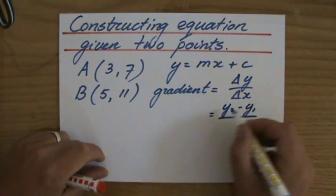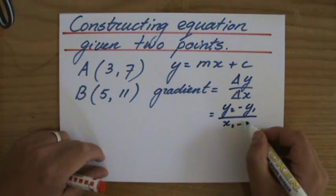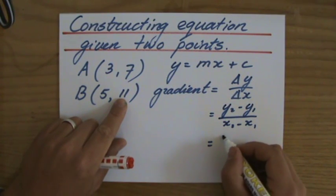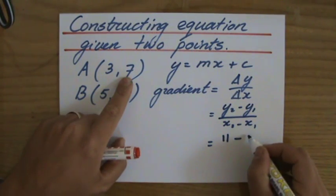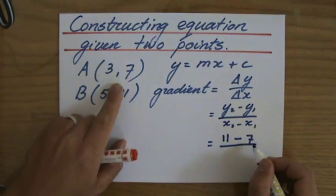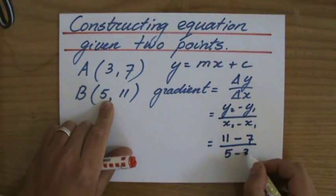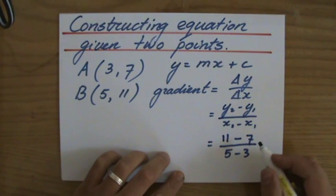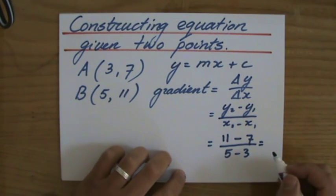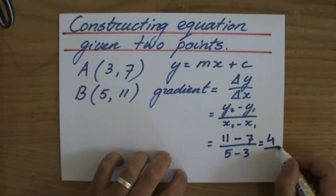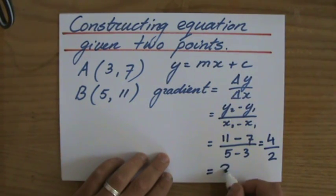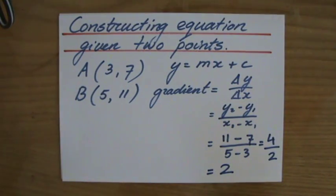That means the same thing: the difference x2 minus x1. That is 11 minus 7 divided by 5 minus 3. I really hope that you are checking your workings now as well to see if you have the same. 11 minus 7, that will be 4. 5 minus 3, that will be 2. And 4 divided by 2 is 2. So the gradient of this line is 2.